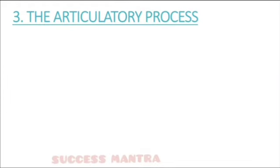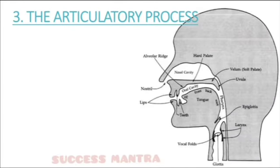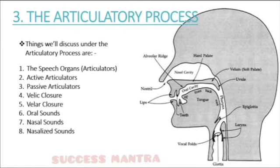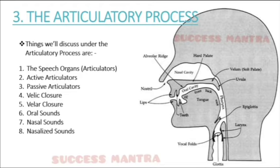Now we move to the third topic: the articulatory process. First we looked at the airstream mechanism, second the phonation process, and now the articulatory process. Topics under this include speech organs, active and passive articulators, velic closure and velar closure, oral sounds, nasal sounds, and nasalized sounds.